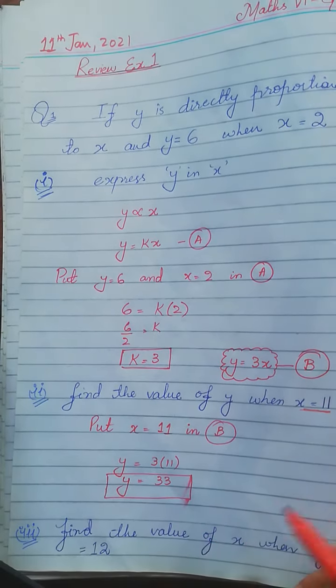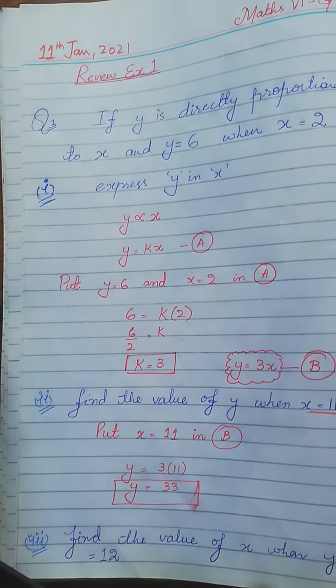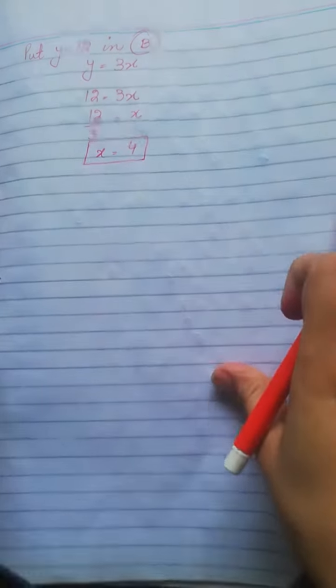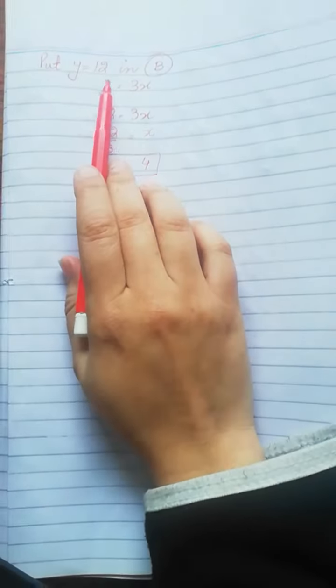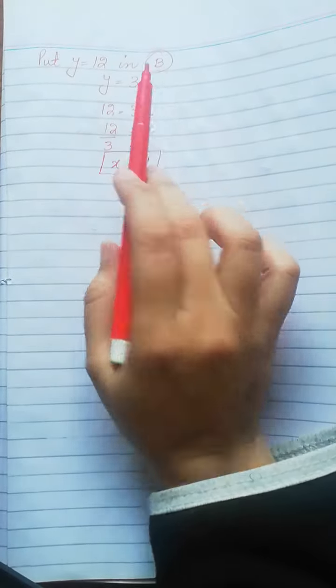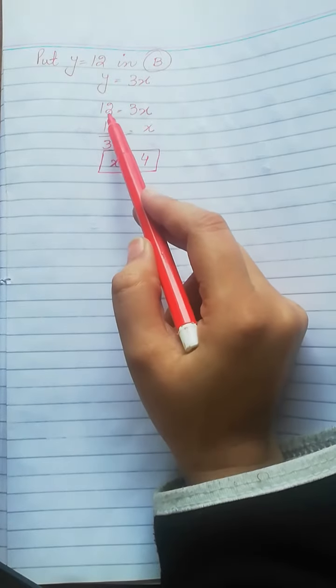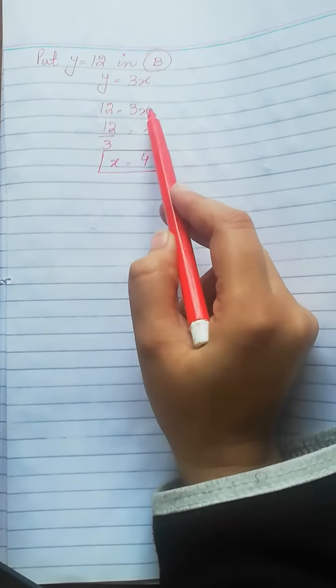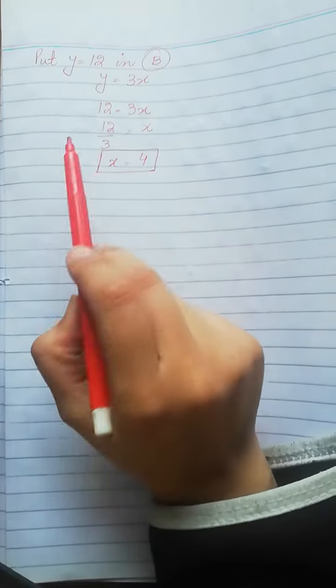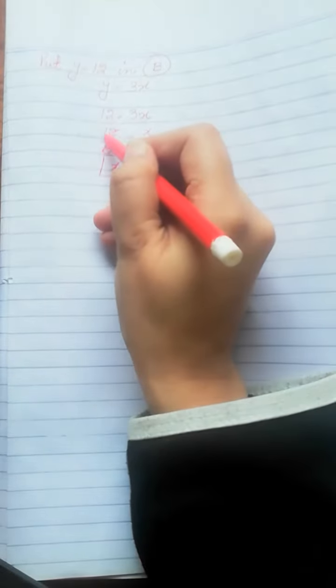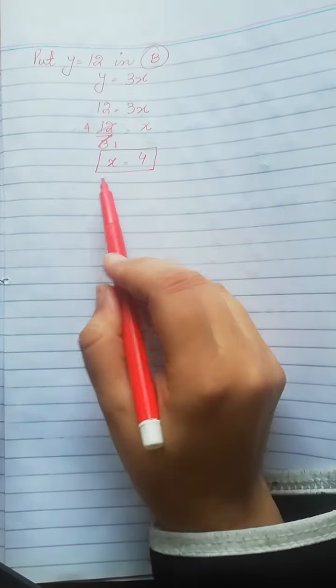Now, in the same way, we find the value of x when y is equal to 12. We substitute y = 12 into equation b: 12 = 3x. Dividing both sides by 3, we get x = 4. So the value of x is equal to 4.